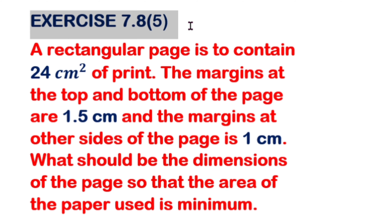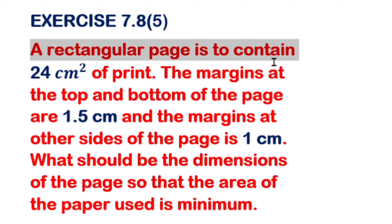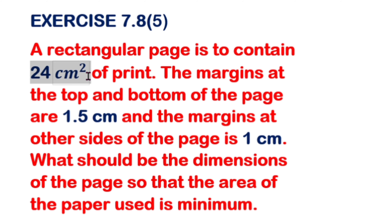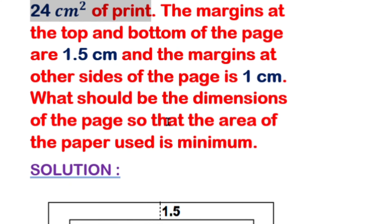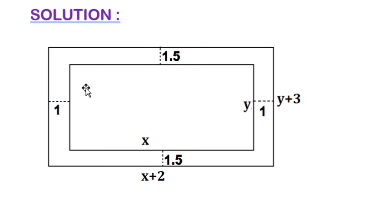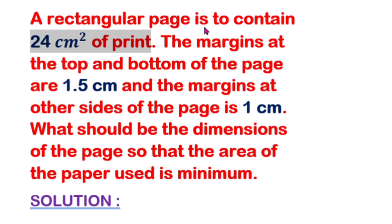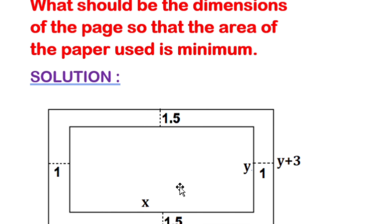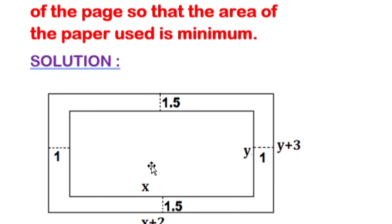Exercise 7.8 Question No. 5. A rectangular page is to contain 24 cm² of print. So, in the paper there is a rectangular page, and the smaller rectangular printed area inside it has an area of 24 cm².